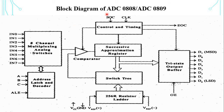This is the block diagram of ADC 0808 or 0809. It has an 8-channel multiplexer that can accept 8 analog inputs in the range 0 to 5 volts and allows one-by-one conversion. The channel selection is done using address lines.